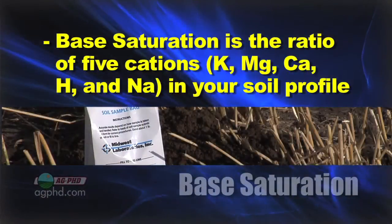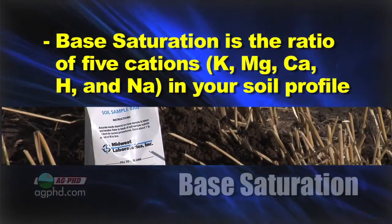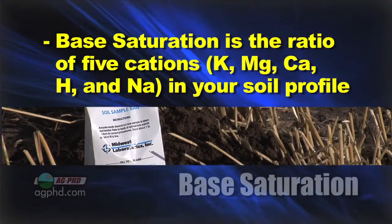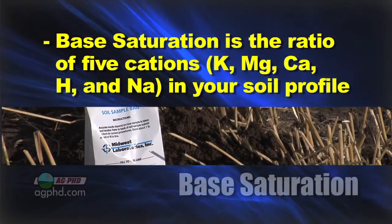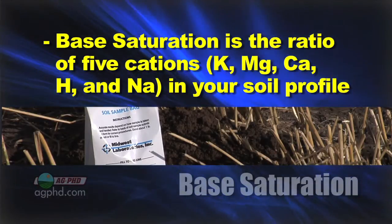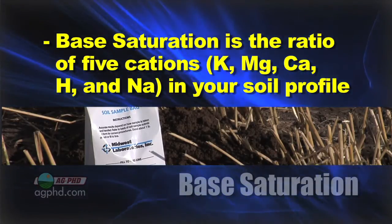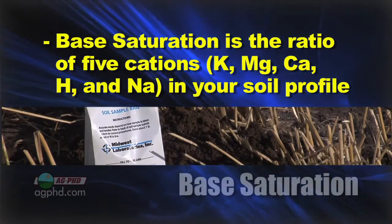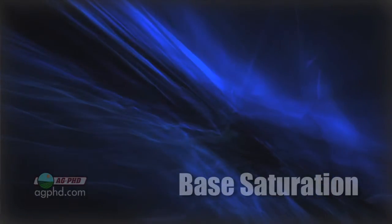Basically, base saturation is a ratio of five different nutrients. These are cations — they're very important in plants — and we want to talk about what each one is and the range that we'd like to see. Let's take them one at a time.